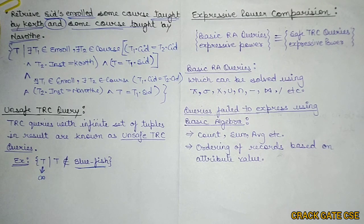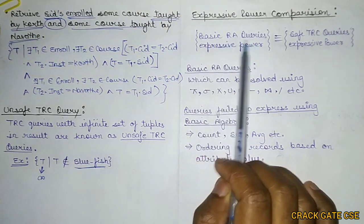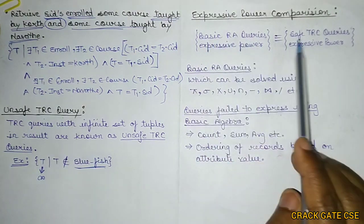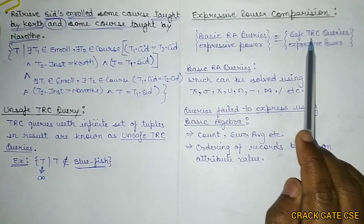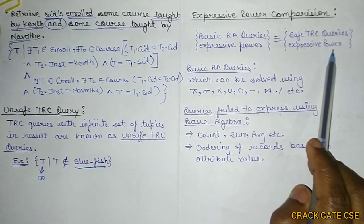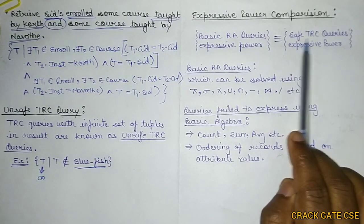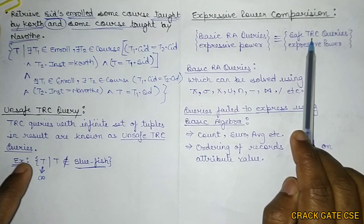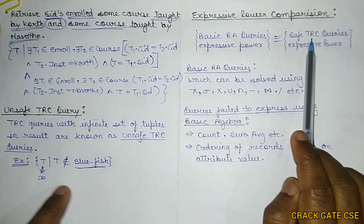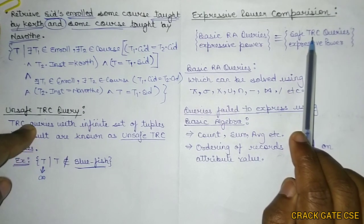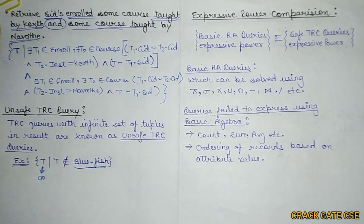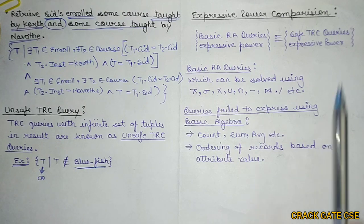The expressive power of relational algebra and safe TRC queries is equivalent. So the relational algebra query expressive power is equivalent to safe TRC. An unsafe TRC query cannot be compared with a relational algebra query, because we are having limited stuff in relational algebra and the infinite stuff cannot be compared.